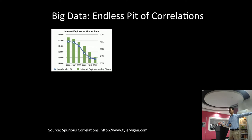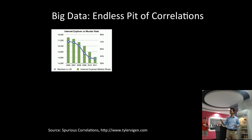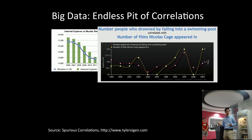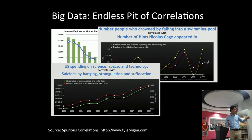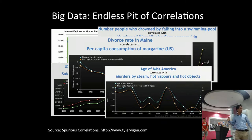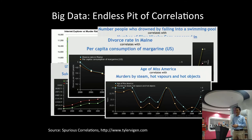So — you're so frustrated with IE, you can go shoot someone? Is that the conclusion we're going to make? The number of people who drowned by falling into a swimming pool correlates with the number of films Nicolas Cage appeared in. People are suicidal after watching Nicolas Cage films? US spending on science-based technology correlates with suicides by hanging, strangulation, and suffocation. Divorce rates, age of Miss America by murders by steam, hot vapors and hot objects — it goes on and on. This blogger just contributes these really random, very high correlations — like 0.99 and above. So if you put this into your model, you might get some really erroneous conclusions.